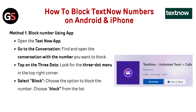Method one: block a number using the app. Open the TextNow app and go to the conversation. Find and open the conversation with the number you want to block. Tap on the three dots menu in the top right corner. Select block — choose the option to block the number from the list.